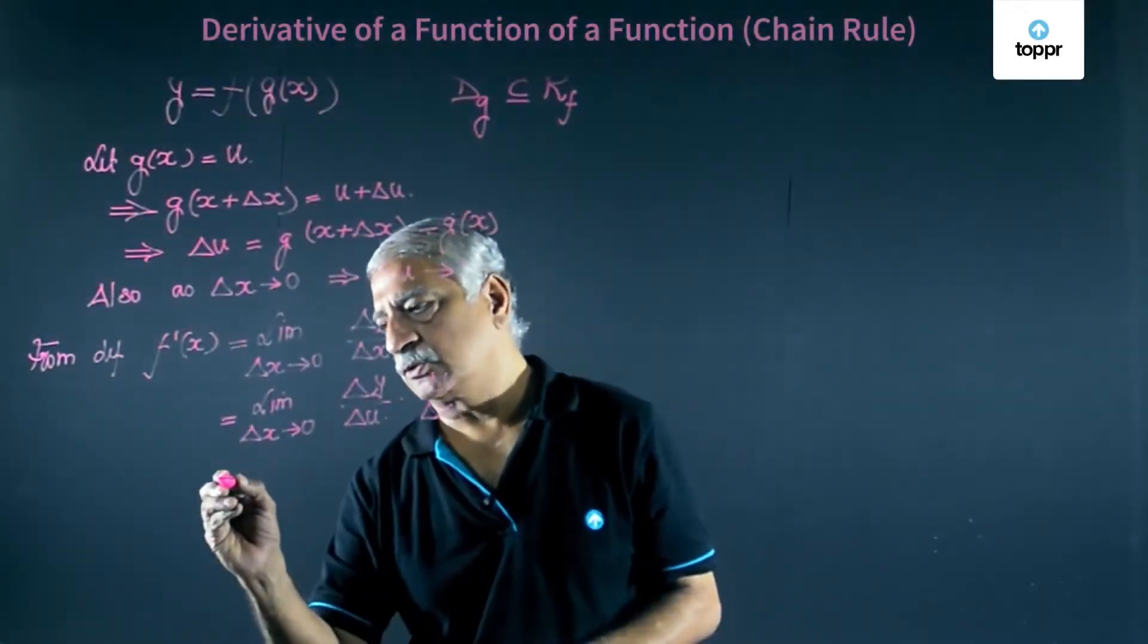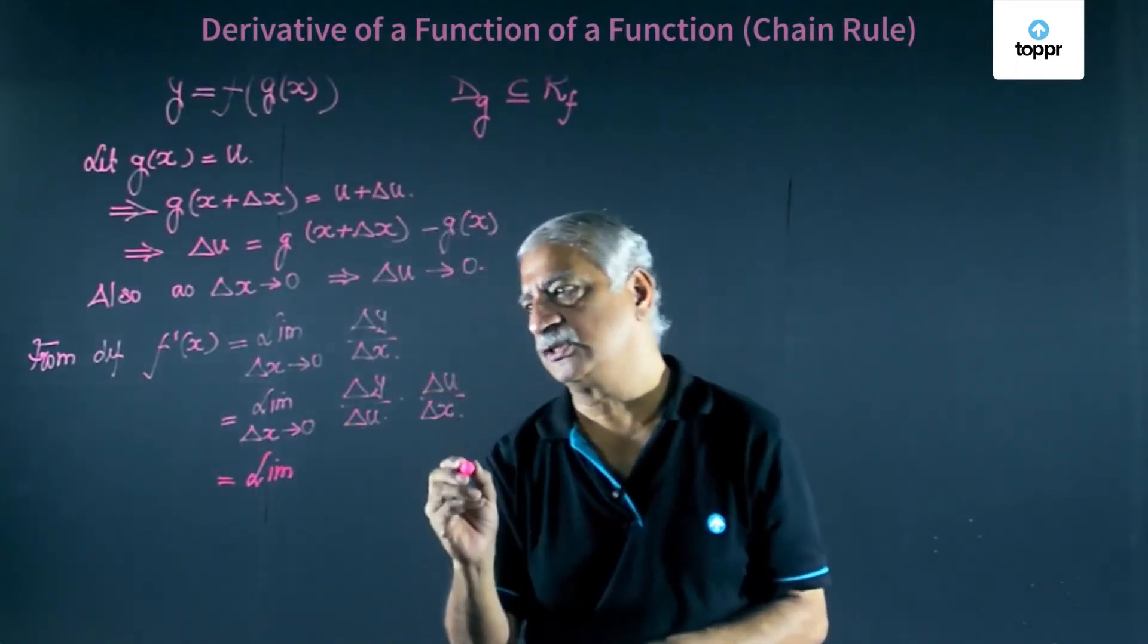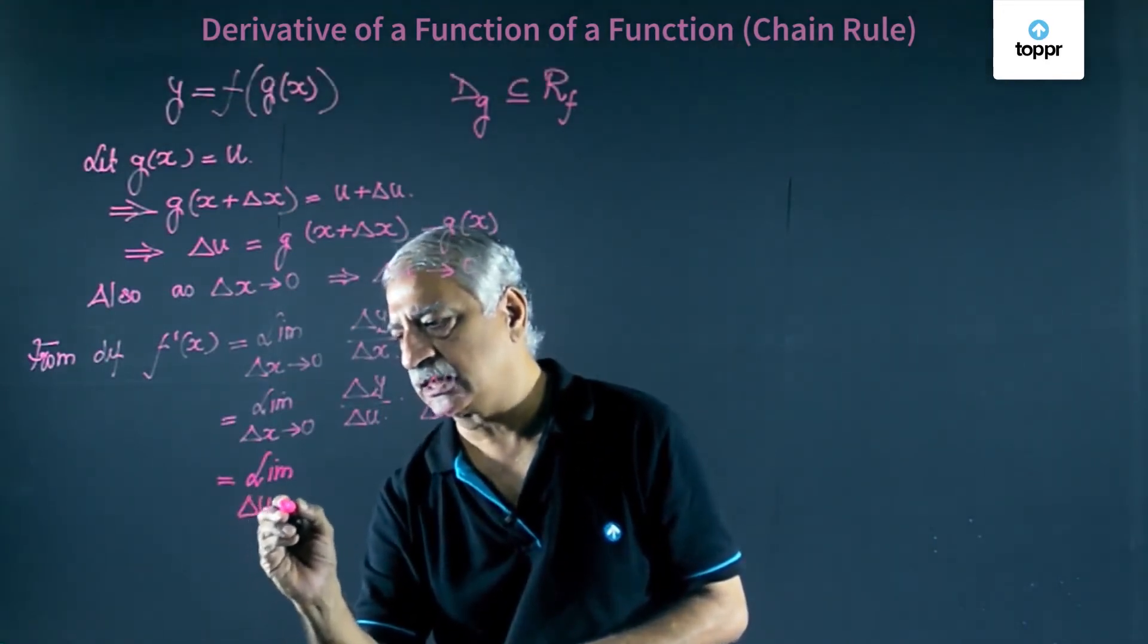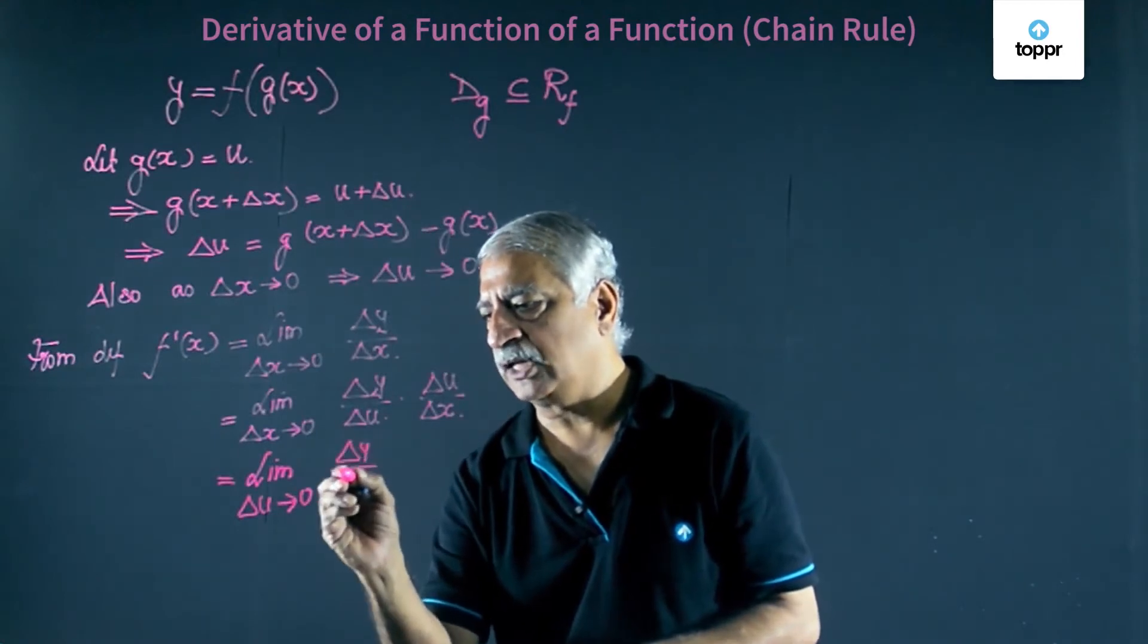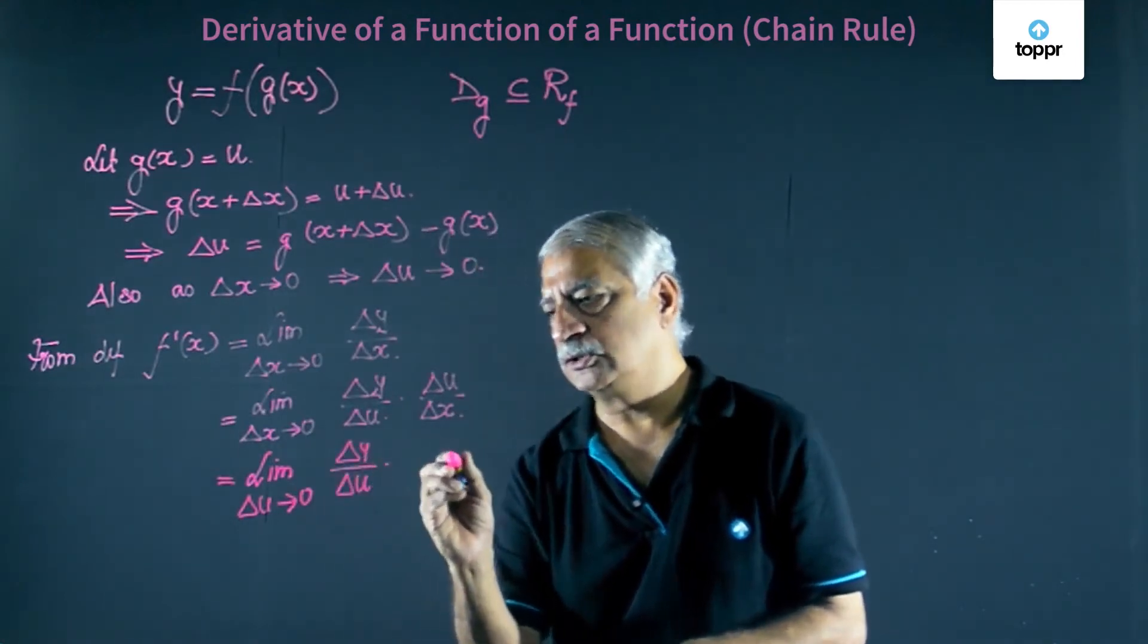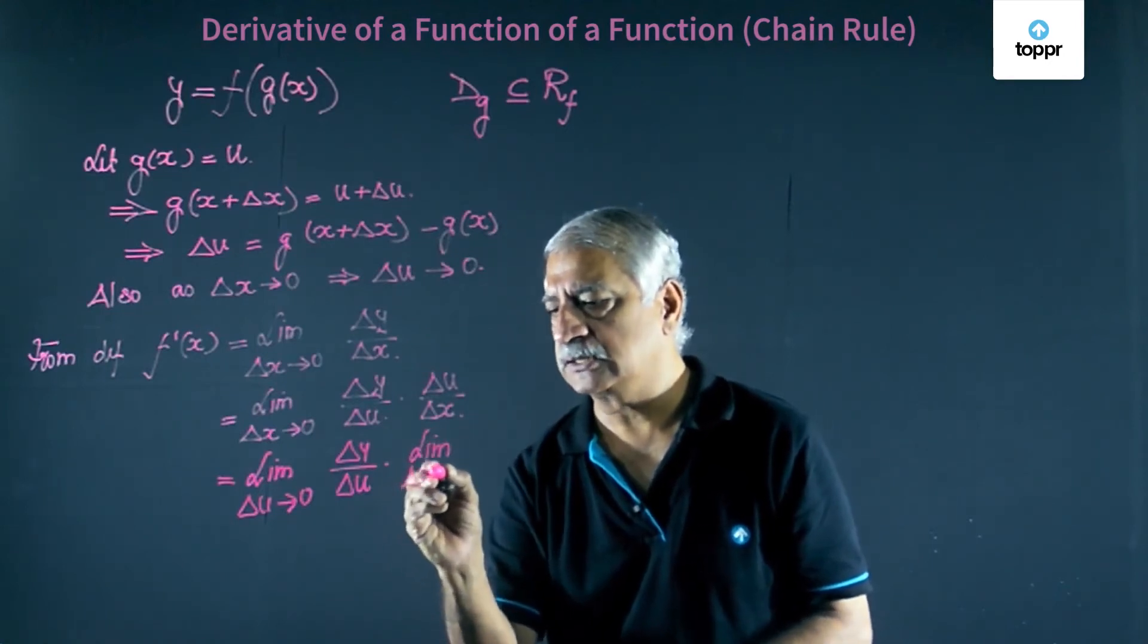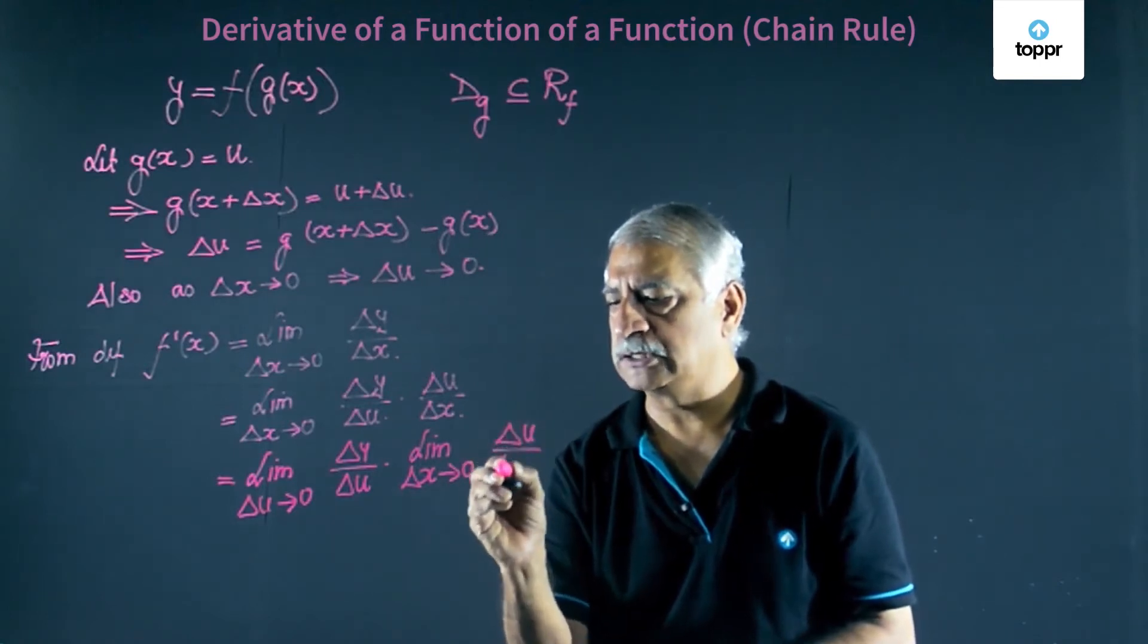This is equal to limit. We already said that as delta x tends to 0, delta u also tends to 0. So I can write this as delta u tends to 0 of delta y by delta u into limit as delta x tends to 0 of delta u by delta x.